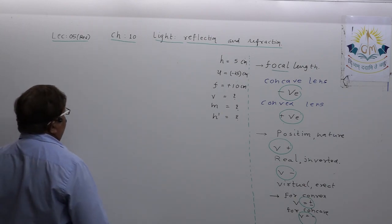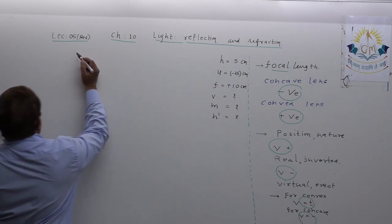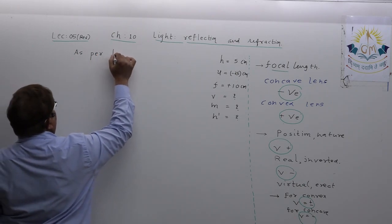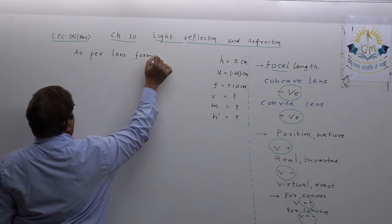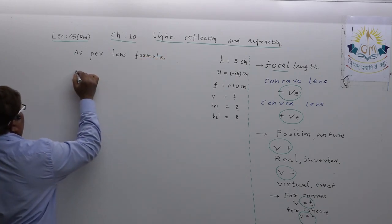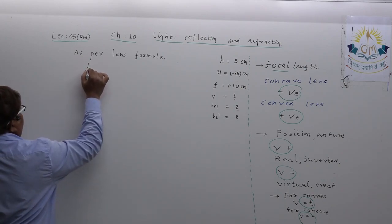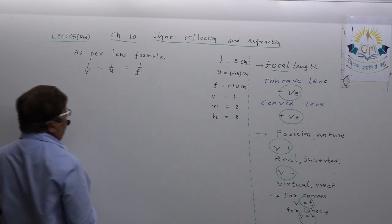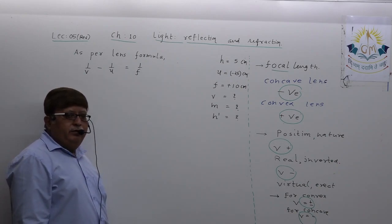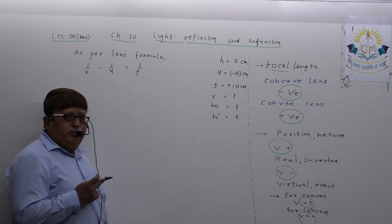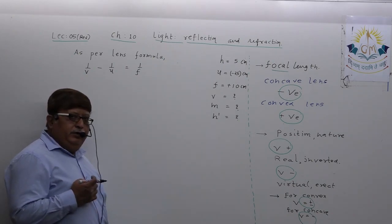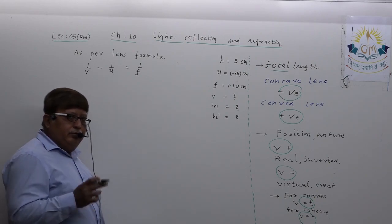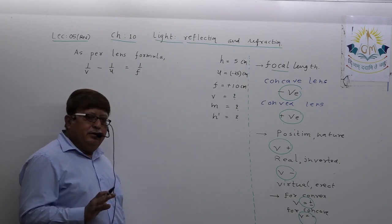So, dear student, what will you write? As per the lens formula — this is compulsory for you to write in solving any example — let us write: 1 upon V minus 1 upon U equals 1 upon F. Before solving the example, you must be clear, dear student: because it is a convex lens, V has to come positive and M has to come negative. That must be extremely clear in your mind.